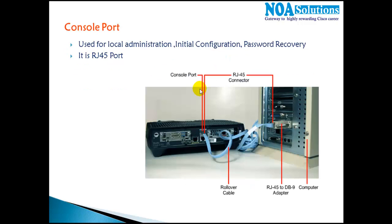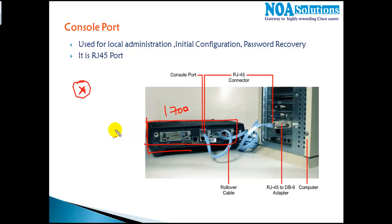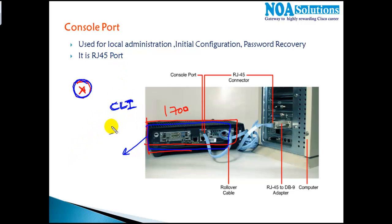Let's take an example: I have a 1700 series router here. A router is like a flat box with no input or output device, so if I want to configure it I need to access its command line. To do that, I can use a console connection with a console cable.